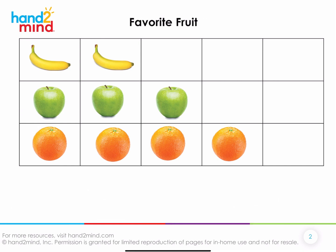How many of you noticed some oranges? Do you see these? It might be helpful that we label this as the row with the oranges, because that's the category. What else did you notice? You noticed there were some apples? And some bananas.